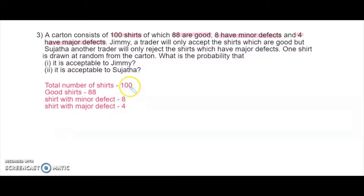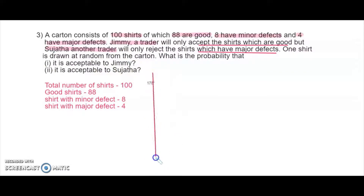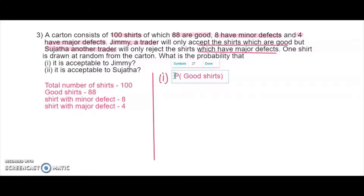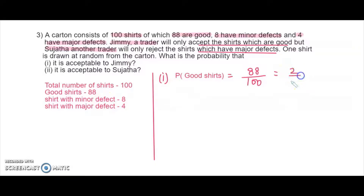There are two people here: Sujata is one trader and Jimmy is the other. Jimmy is going to take only the shirt which is good, whereas Sujata is going to reject only those shirts which have major defects. One shirt is selected randomly. For Jimmy, who accepts only good shirts, the probability is 88 over 100, which equals 0.88.